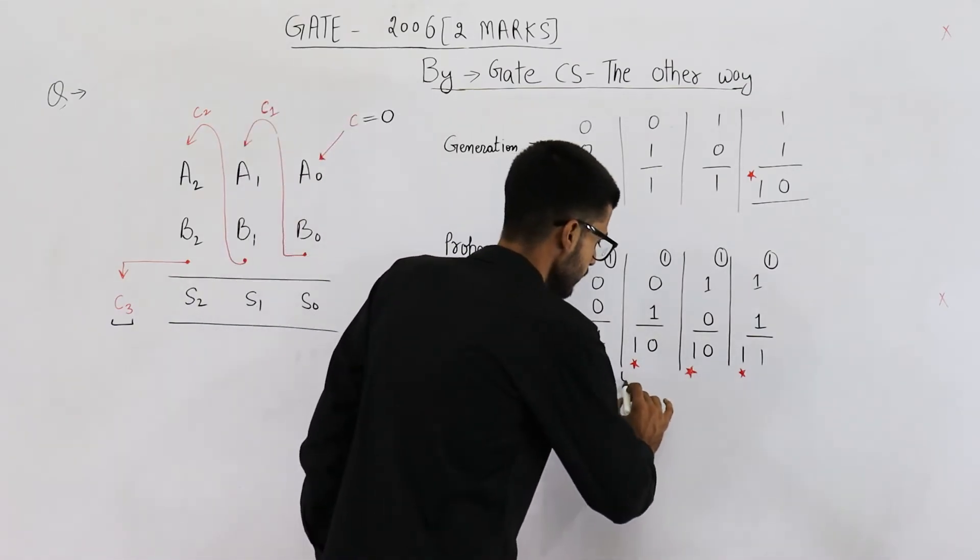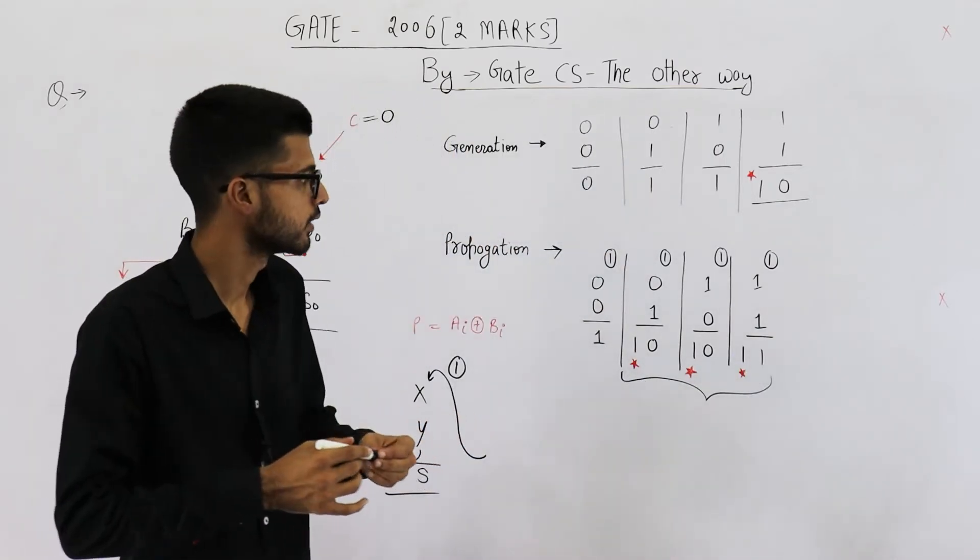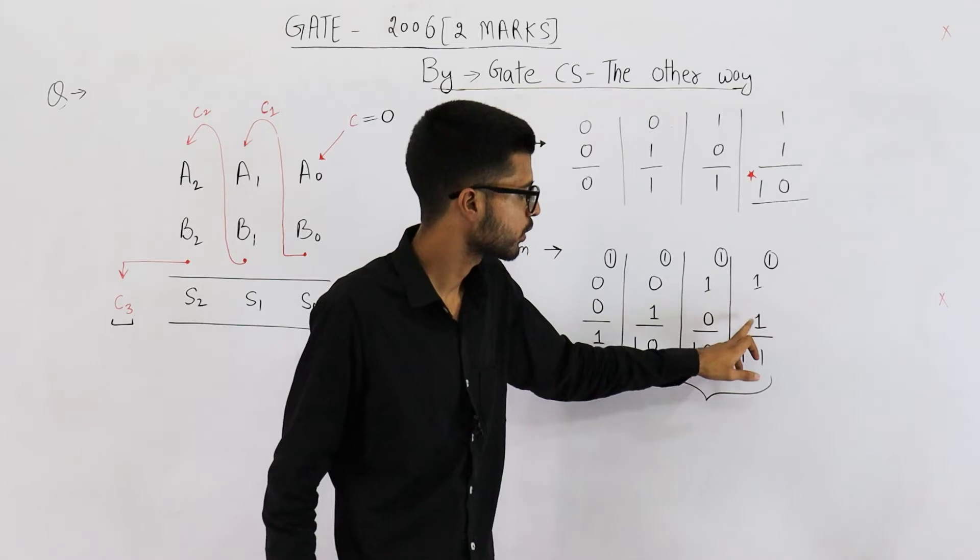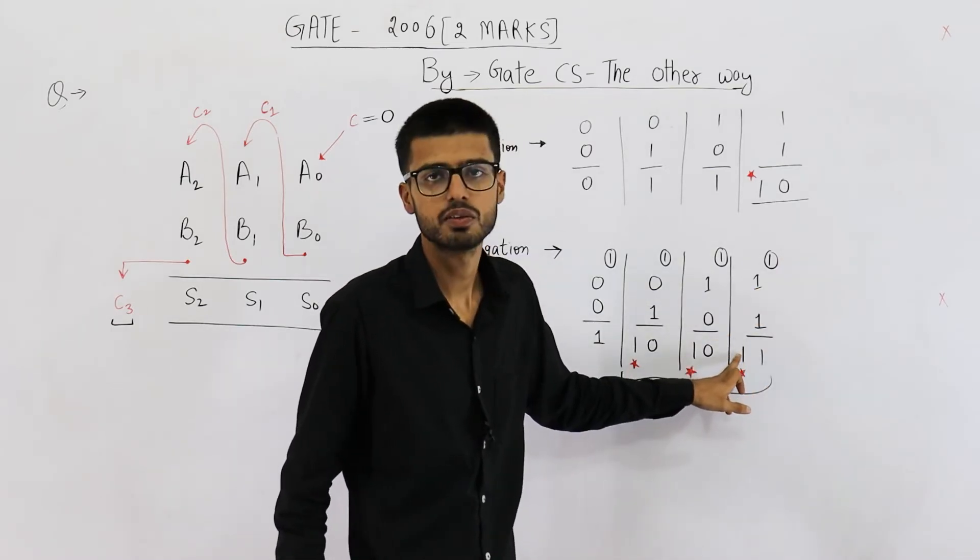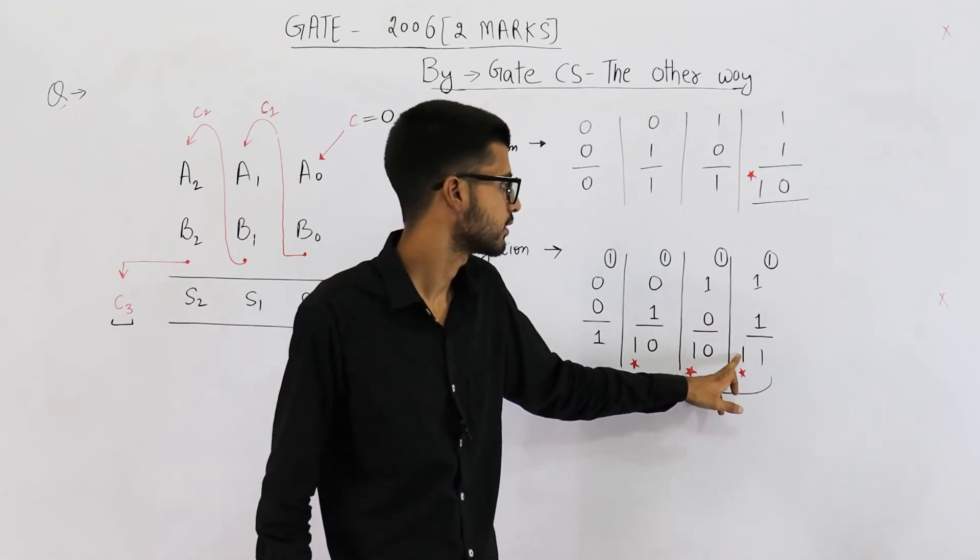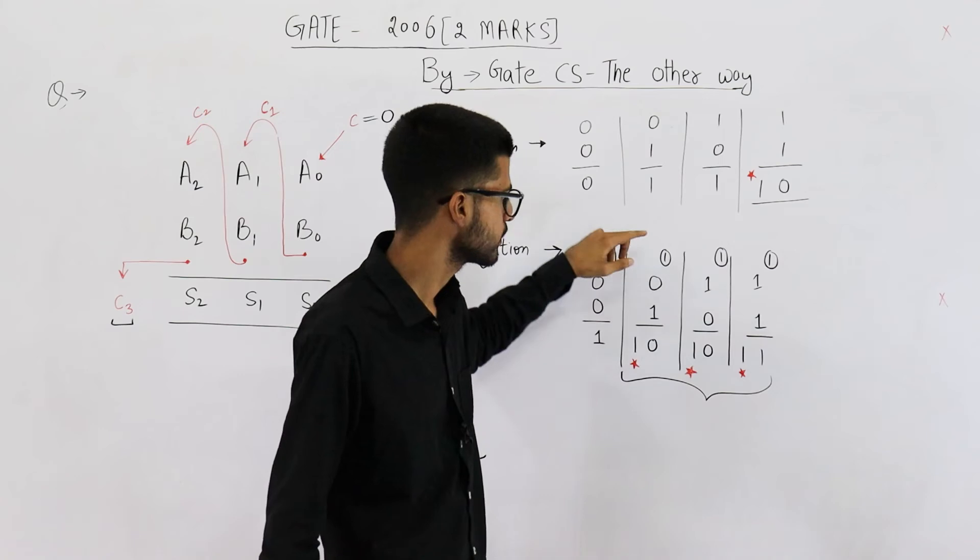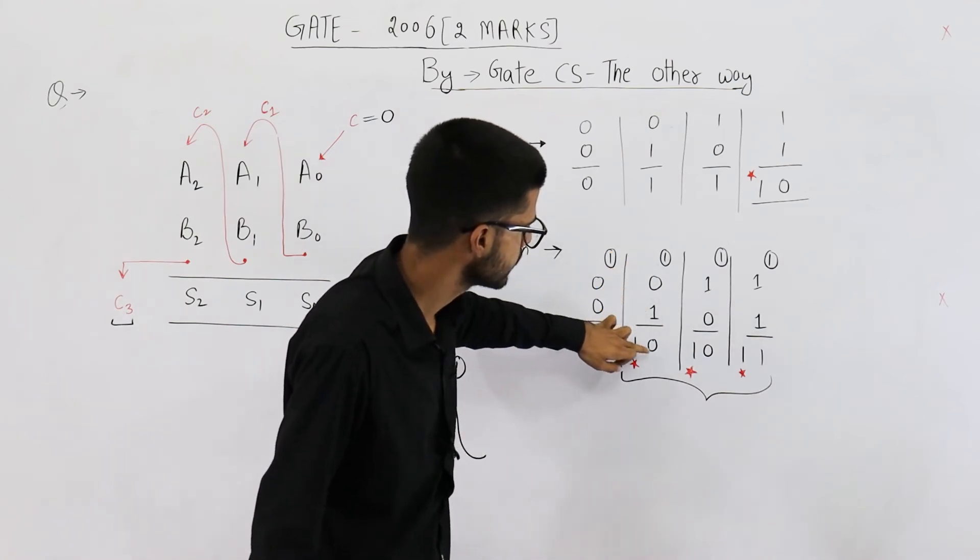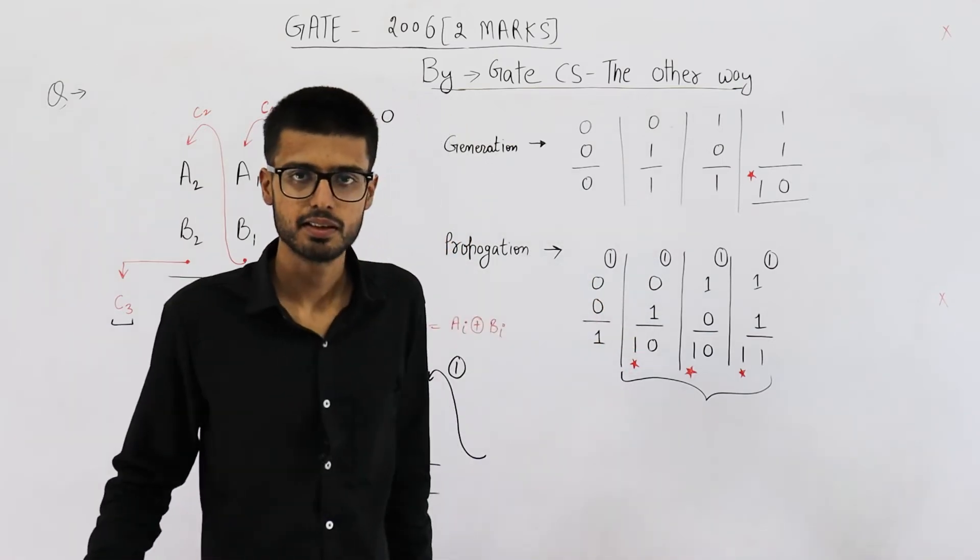But you can see in all of these three cases, the carry is being propagated. See 1 plus 1 plus 1 is 1, 1. So the carry in is 1, carry out is also 1. The carry got propagated as it is. This carry got propagated as it is. Here also you can see 1 plus 1 is 1, 0. Carry out is 1.